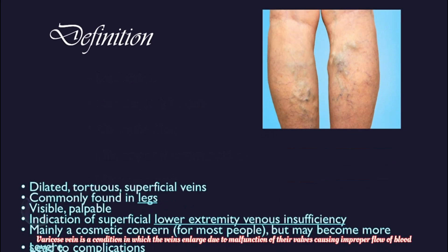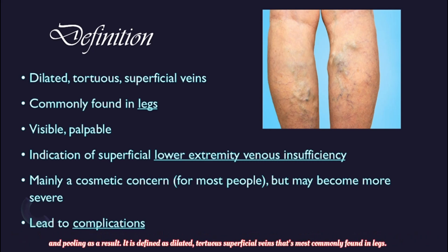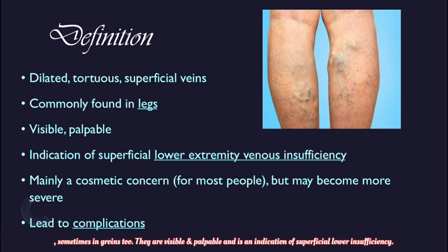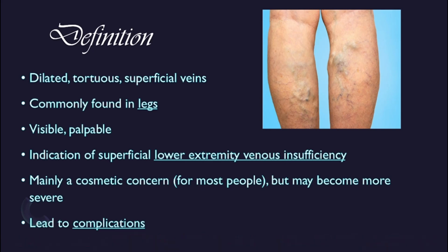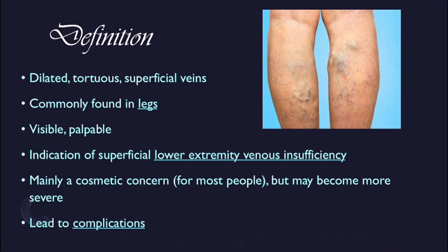Varicose vein is a condition in which the veins enlarge due to malfunction of their valves, causing improper flow of blood and pooling. It is defined as dilated tortuous superficial veins, most commonly found in the legs and sometimes in the groins too. They are visible and palpable and are an indication of superficial lower extremity venous insufficiency. For most people they are mainly a cosmetic concern, but when left untreated they may lead to many complications.